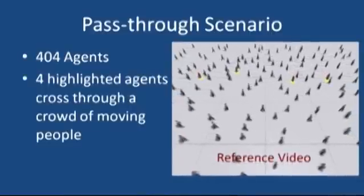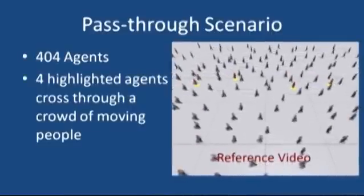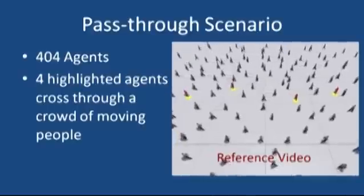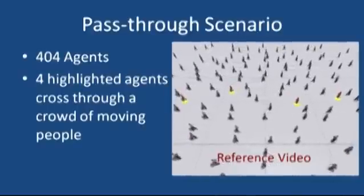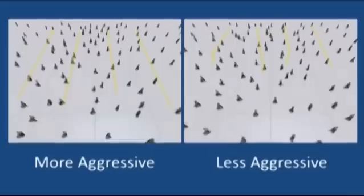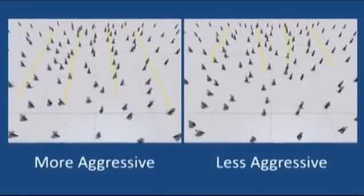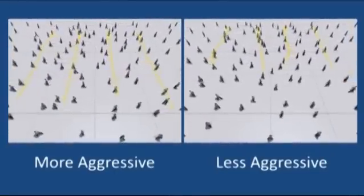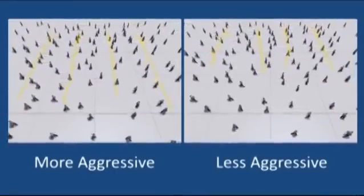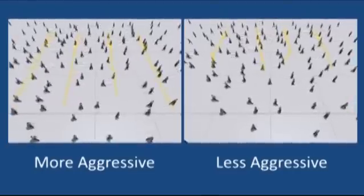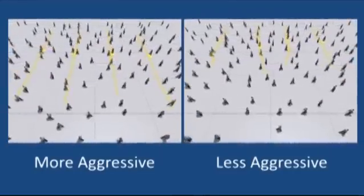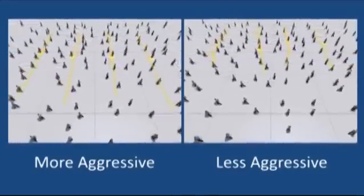We now show agents with different personalities in several scenarios. In this first scenario, four highlighted agents must pass through a crowd of moving people. Using our mapping, the agents on the left are given parameters corresponding to more aggressive behavior and those on the right less aggressive. The aggressive agents take a more direct route and are less affected by those in their way.